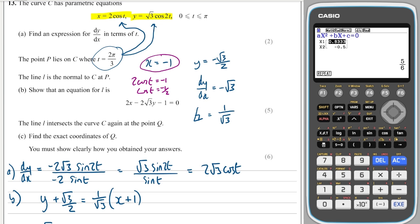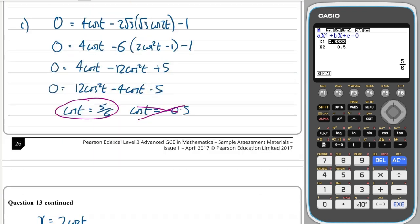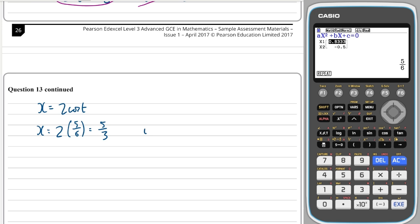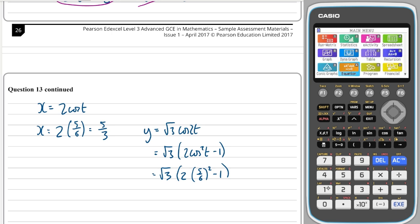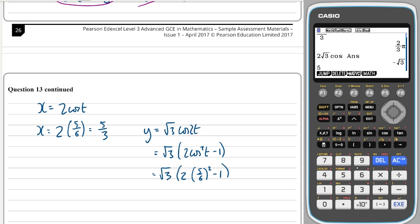The y value is equal to √3 cos(2t), so y equals √3 cos(2t), which is equal to √3 times (2cos²(t) - 1), again using the double angle formula. And we know what cos(t) is, it's 5/6, so this is what I need to put into my calculator.